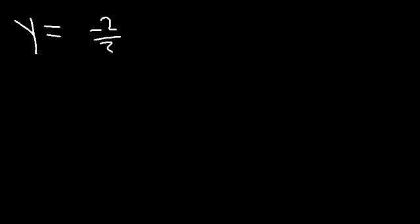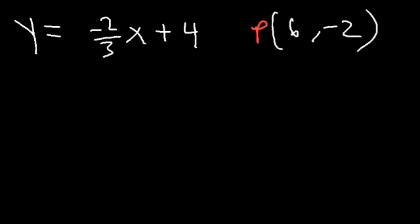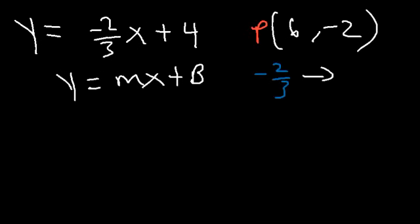Here's the final example for today. y is equal to negative 2 thirds x plus 4, with the point 6, negative 2. Find the equation of the line that is perpendicular to negative 2 thirds x plus 4 and passes through the point 6, negative 2. Using slope-intercept form y equals mx plus b, the slope changes from negative 2 thirds to positive 3 over 2 for the perpendicular line. Let's plug in 6 for x and negative 2 for y.